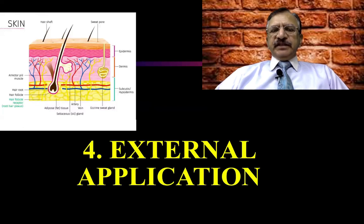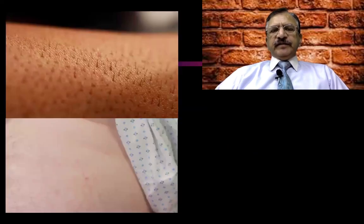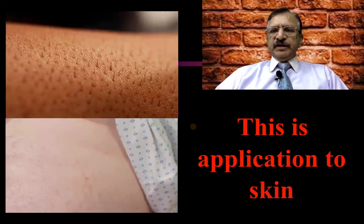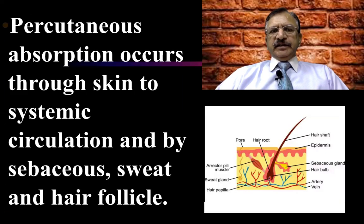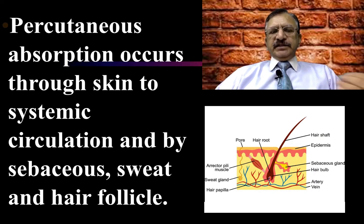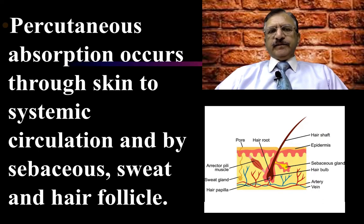Then external application on the skin. This is the application or rubbing of some material on the skin. Percutaneous absorption occurs through the skin to the systemic circulation, and this is facilitated by the sebaceous glands, the sweat glands, and the hair follicles.